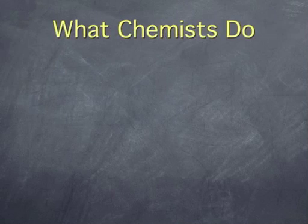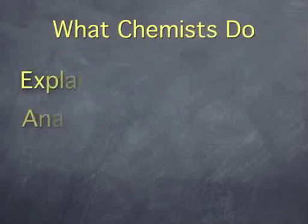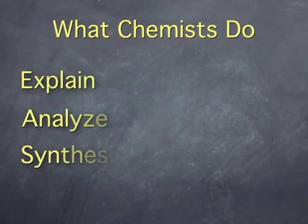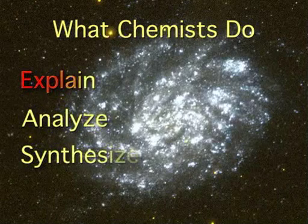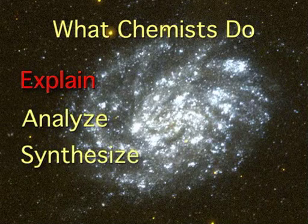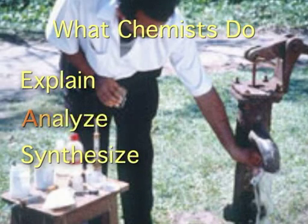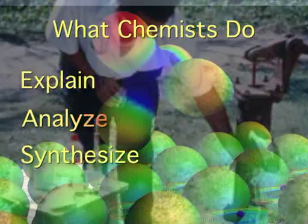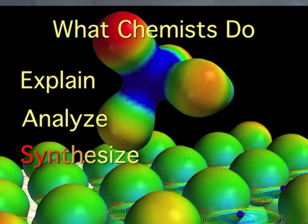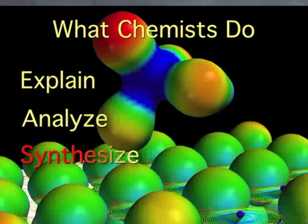So what do chemists do? We can break their activities up into three basic categories. Chemists explain phenomena, showing how and why things happen. Chemists analyze substances to determine their chemical makeup. Chemists synthesize new substances, such as medicines and new materials.